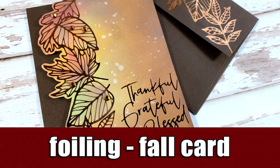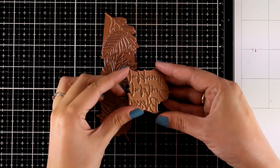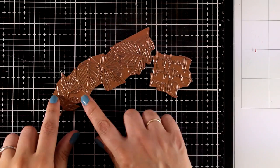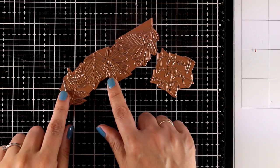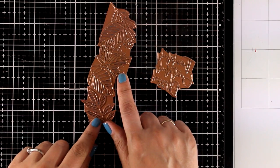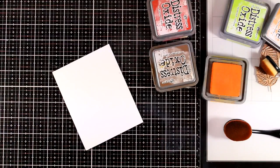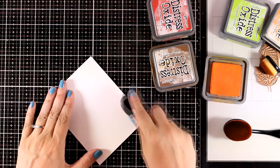Hi everyone, it's Vicky here and welcome back to another foiling fun video. Today I'm going to play with two plates that have just been released from Spellbinders' fall collection: the autumn leaf border, which is called leaves a row of leaves, and the sentiment called stylish script thankful.